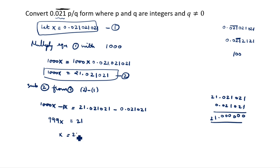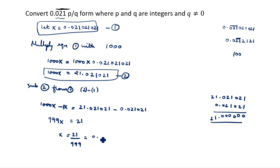Therefore x is equal to 21 divided by 999. So 0.021 bar expressed in p by q form is 21 over 999.